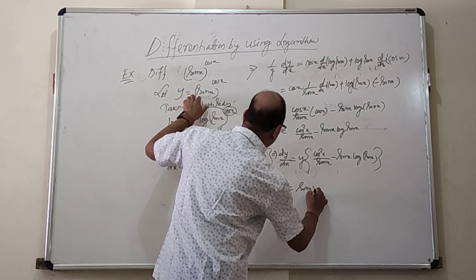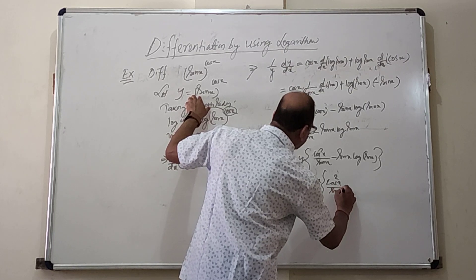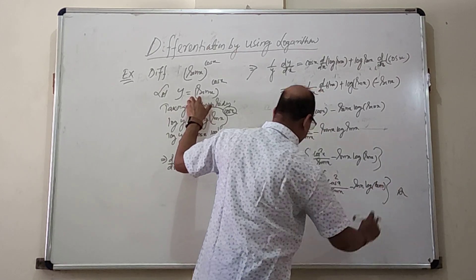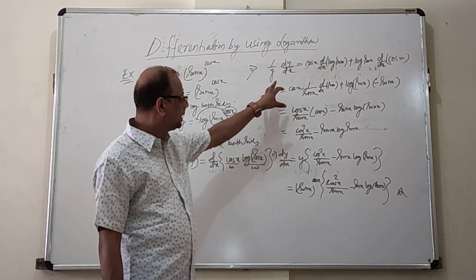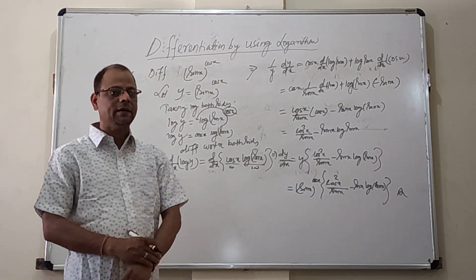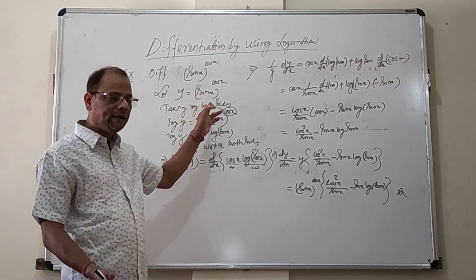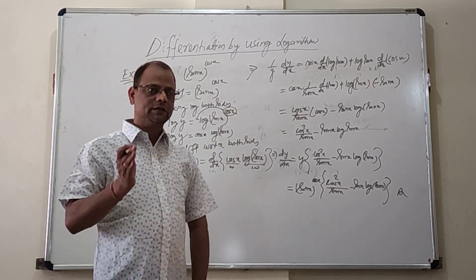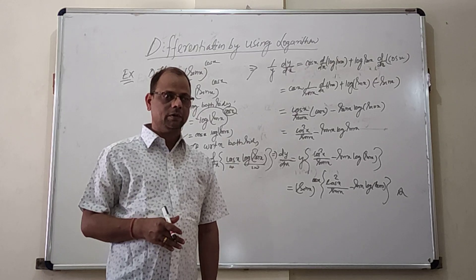Therefore dy/dx equals y times (cos²x / sin x minus sin x · log(sin x)), and substituting y equals sin x to the power cos x, the final answer is sin x^(cos x) times (cos²x / sin x minus sin x · log(sin x)). This completes the two examples of differentiation using logarithm. Thank you.